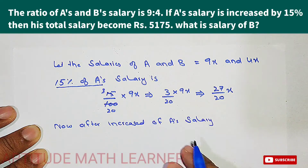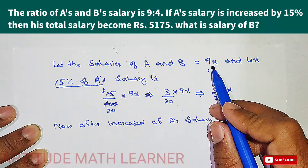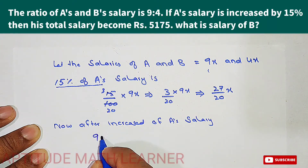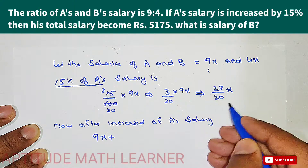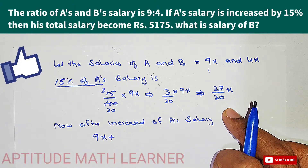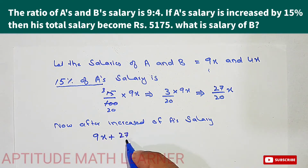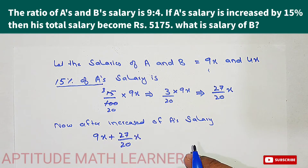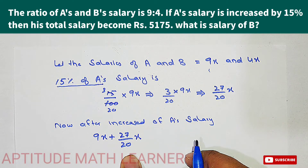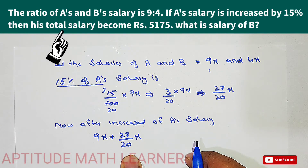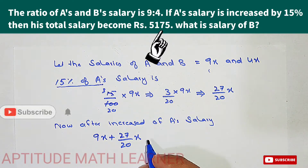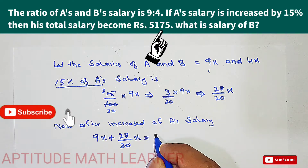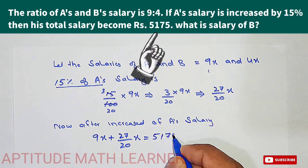After the increase, we have to add A's salary by 15 percent of 9x. Here we get 9x — this is the original salary — and we are now just increasing it by its 15 percent, which is 27 divided by 20x. After increasing, the total salary of A becomes rupees 5175.